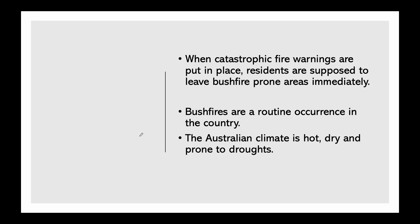Are these bushfires new to Australia? Bushfires are a routine occurrence in the country. The Australian climate is so hot and dry and very prone to droughts, so at any time of the year some parts of Australia are prone to bushfires. Such fires happen when grass, branches, and trees start burning in an uncontrolled manner. For New South Wales and Queensland especially, the peak risk for bushfires is during spring and early summer.